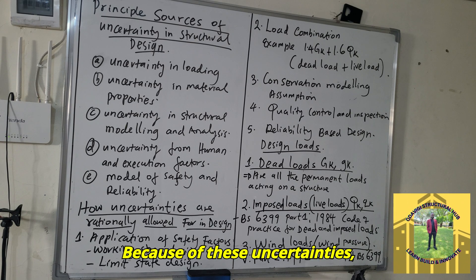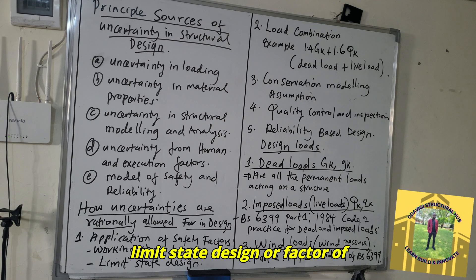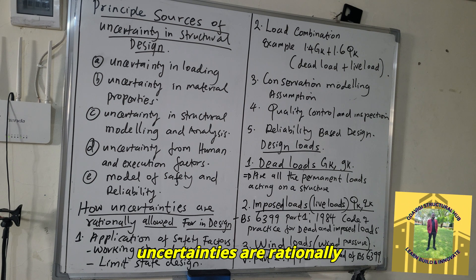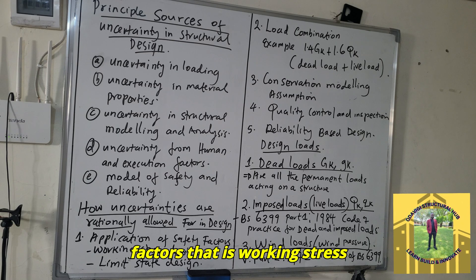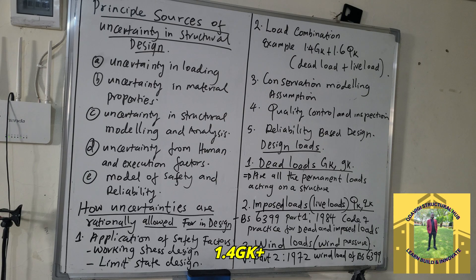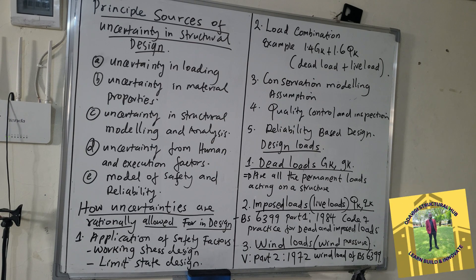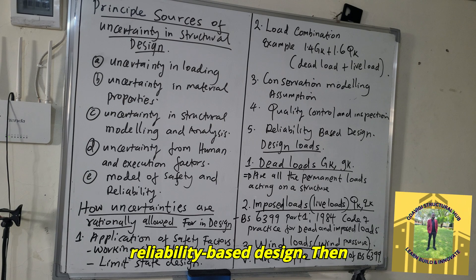Because of these uncertainties, structural design codes apply partial safety factors in limit state design or factors of safety in working stress design to ensure a low probability of failure. Uncertainties are rationally handled through: application of safety factors in both working stress and limit state design; load combinations such as 1.4GK + 1.6QK (dead load plus live load); conservative modeling assumptions; quality control and inspection; and reliability-based design.